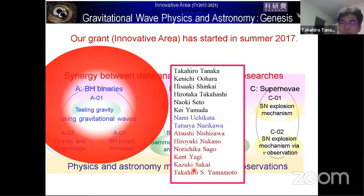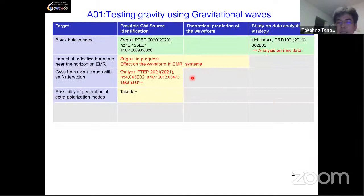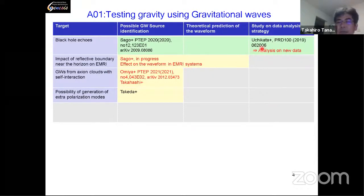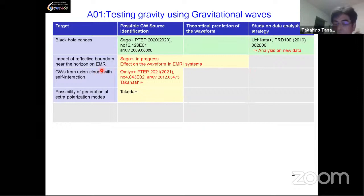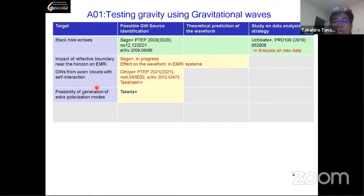Today's talk is based on collaborations with many members. Many works are going on in parallel, but today I'd like to focus on the highlighted ones. One is about black hole echoes, for which we have published several papers with some new analysis results ongoing. Another issue is about the impact of the reflective boundary near the horizon of an EMRI system, which is also related to the echo topic.